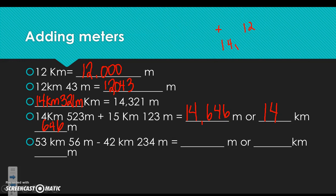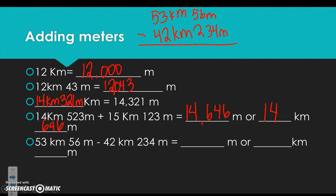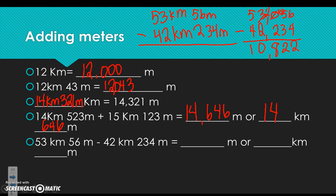Subtracting: 53 kilometers 56 meters minus 42 kilometers 234 meters. Convert to 53,056 minus 42,234. 6−4=2, 5−3=2, can't take 2 from 0 so regroup: 2 from 10 is 8, 2 from 2 is 0. Result: 10,822 meters, or equivalently 10 kilometers 822 meters.